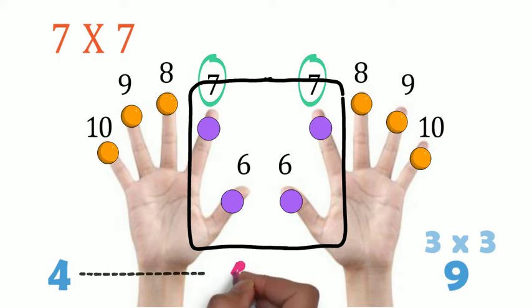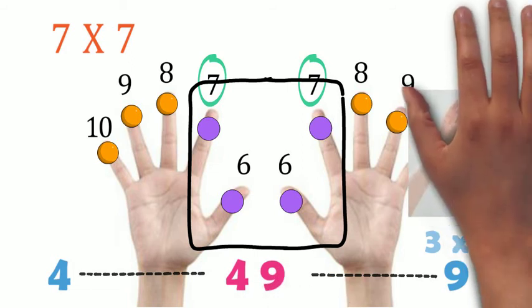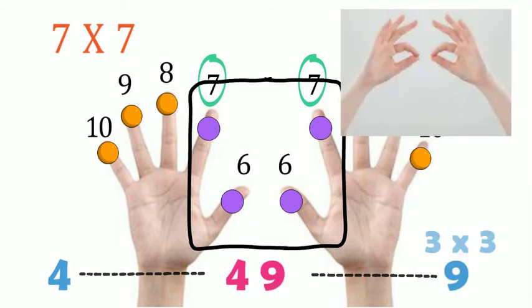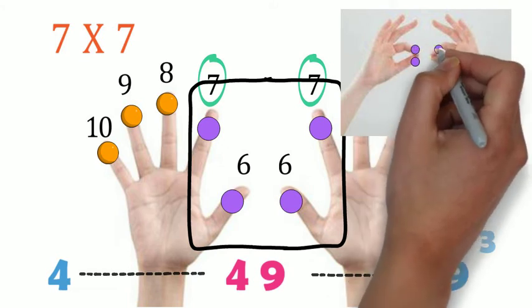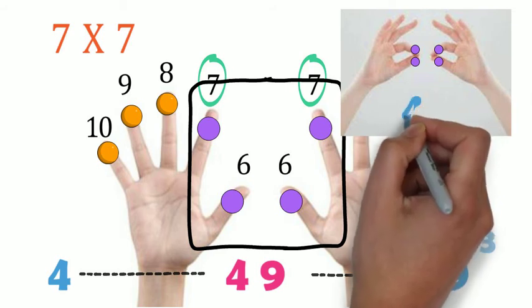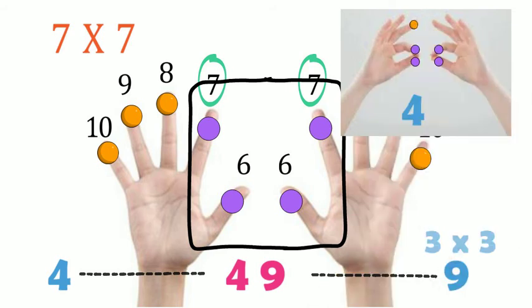So that's the answer: 49. Easy, isn't it? To make it easier, you may want to join the fingers for the first part like this. So we count the fingers in the middle: one, two, three, four. And the open ones on the left: one, two, three. Multiply it with the ones on the right: one, two, three. So three times three is nine, and we get the answer 49.